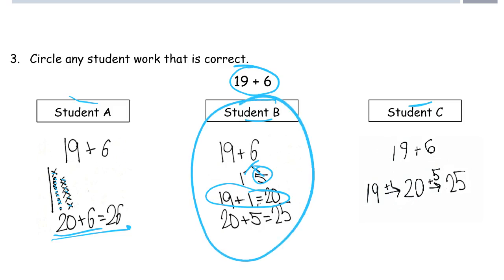Student C, we have 19 plus 6. The same kind of thing except written down the arrow way. Added the 1 first, right? So adding 6, adding the 1 first to get to 20 and then adding 5 more, 25. See how writing down the arrow way is easier than writing down two equations?